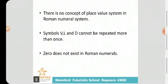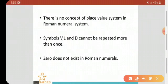Rule number 4: There is no concept of place value system in Roman numeral system. Like in Hindu-Arabic numerals, we have place value system: ones, tens, hundreds, thousands, etc. But in Roman numeral system, we do not have any concept of place value system.